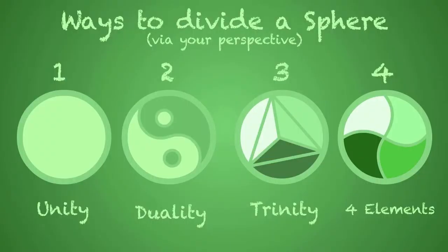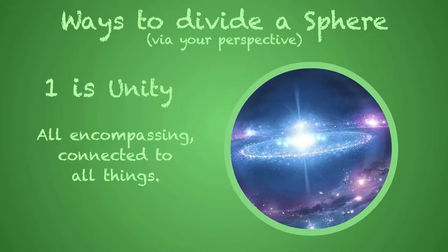Our reality can be divided in a number of ways that will yield alternative perspectives of what is happening all around you. If you look at everything from a perspective of one, which is unity, you're looking at the full encompassment of everything. You're looking at the source field. There are no dualities. Everything is one.